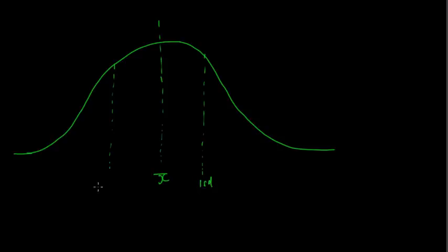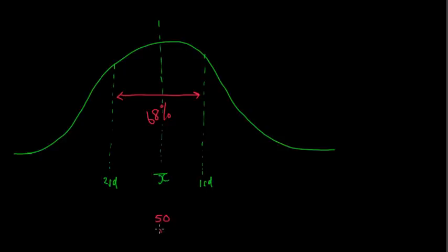We say that 68% of all scores lie within one standard deviation of the mean. So, 68% of the scores lie within one standard deviation either side of the mean. In that last example where we said the mean was 50, that would mean that 68% of scores lie between 60 and 40, which is about right, because most people will score closer to the mean.